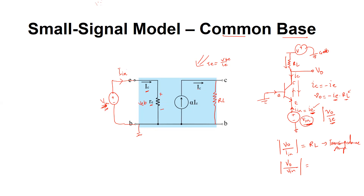The collector current flowing through the collector pin is a dependent current source, modeled as a current-controlled current source: alpha times i_e. So i_c divided by i_e equals alpha. Neglecting the base current contribution, i_c is approximately equal to i_e, and therefore alpha is approximately equal to one. This means the current gain of this amplifier is one or less than one, so we use it as a current buffer rather than a current amplifier.